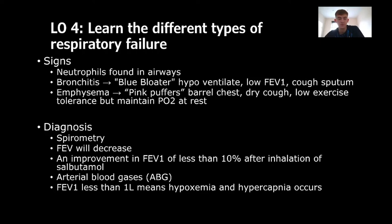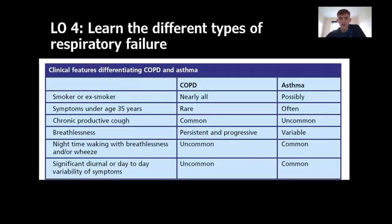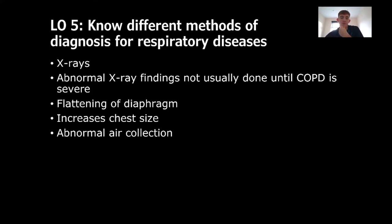Diagnosis uses spirometry: FEV1 will be decreased, and an improvement in FEV1 of less than 10% after inhalation of salbutamol indicates COPD. The patient is given salbutamol and the degree of FEV1 improvement helps distinguish COPD from asthma. Arterial blood gases — CO2 and O2 levels — can also be checked. An FEV1 below 1 litre indicates hypoxemia. A comparison table shows key differences: chronic productive cough is uncommon in asthma but common in COPD; nighttime wheeze is especially associated with asthma; and symptom variability is seen in asthma, whereas COPD symptoms tend to be consistent.